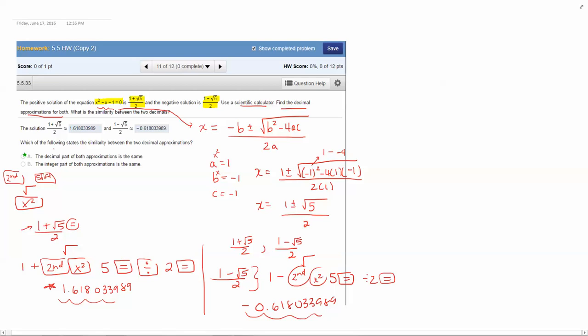But this question is asking you to compare and look for something special that happens in the decimal approximations. That means after the ones digit, look at the decimal part and notice they are identical. So the decimal part of both approximations is the same. The integer part is talking about the one and the zero and those are not the same. So this is just an explanation of this investigation. Really it was just asking you to type those numbers in the calculator, see what you get, compare the decimal parts, and you'll notice that they are the same.